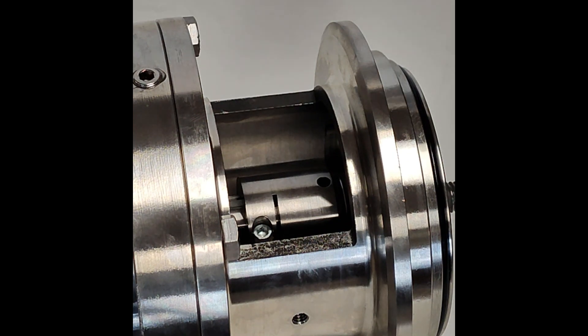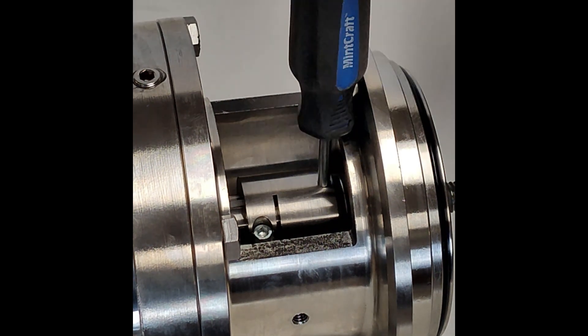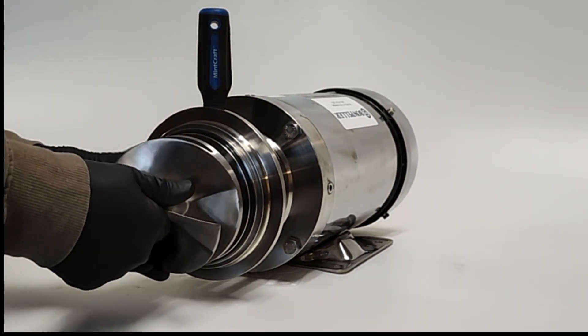Insert a number one screwdriver or a similar tool into the hole in the pump shaft. Thread the impeller onto the pump shaft. The direction is clockwise.